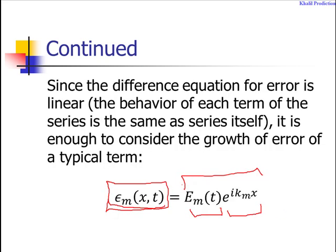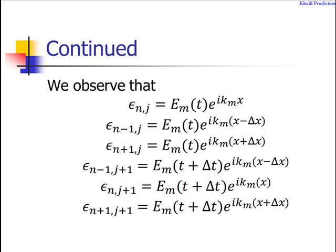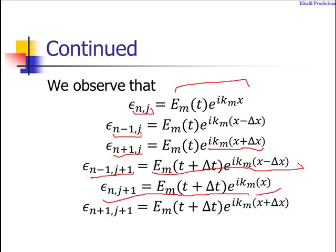Using this estimate, we can generate the error of approximation on different nodes. The error on node (n,j) is e_m(t)e^(i k_m x). The error on node (n-1,j) is e_m(t)e^(i k_m (x - Δx)). The error at node (n+1,j) is e_m(t)e^(i k_m (x + Δx)). Similarly, the error at node (n-1,j+1) is e_m(t + Δt)e^(i k_m (x - Δx)), and the error at node (n,j+1) is e_m(t + Δt)e^(i k_m x). We have calculated the error at different nodes on which this relation is defined.